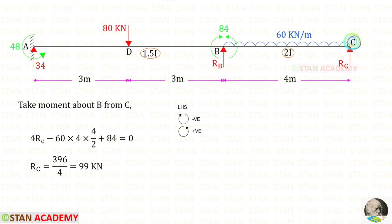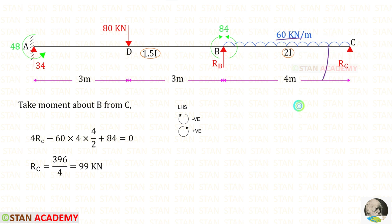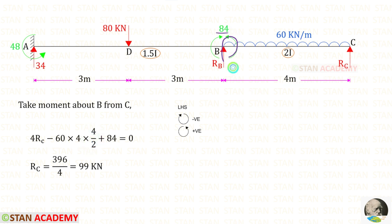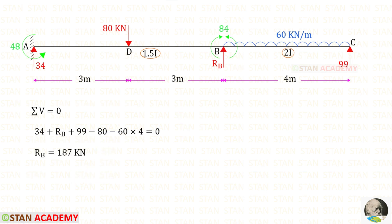From point C, taking moment about B with the left-hand side rule to find RC: RC acts anticlockwise (positive) with distance 4. The UDL acts clockwise (negative) — we multiply the load by the distance and then by 2. MB acts anticlockwise (positive). For RC we get 99 kN. Then, by vertical equilibrium, we can find RB.